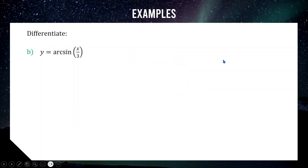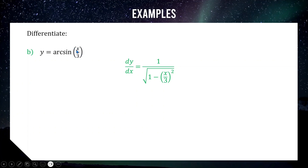Moving on to question b: differentiate arc sine of x over 3. Keep in mind arc sine is just another way of saying sine inverse, so this is sine inverse of x over 3. Applying our formula, the derivative is 1 over the square root of 1 minus (x/3) squared. Because the inside function is x over 3 rather than just x, we also need to multiply by the derivative of x over 3, which is one third — that's the chain rule.